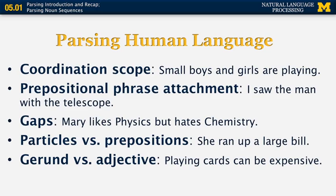Parsing human language, on the other hand, is very different. The first problem is coordination scope. Look at the sentence: 'small boys and girls are playing.' This sentence can have two different interpretations. The adjective 'small' can attach to either 'boys' — in which case we have boys who are small and girls who may or may not be small — or the alternative interpretation is that both boys and girls are small and they are both playing.